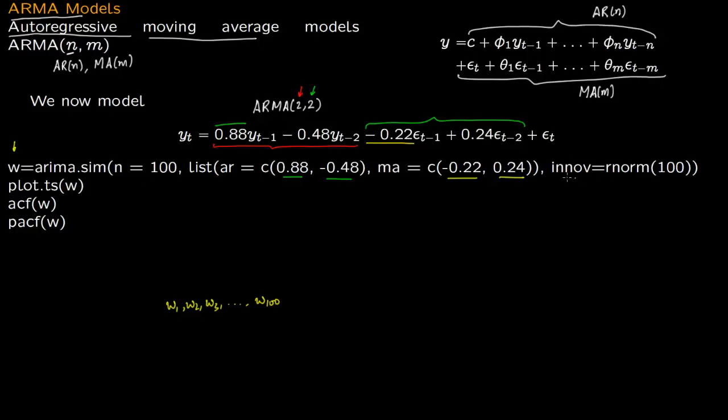The innov=rnorm(100) means we draw the error term epsilon from a normal random variable N(0,1). The 100 corresponds to the sample size. You could write this as rnorm(100, 0, 1). If you want a random variable with different mean and variance, you change these parameters.